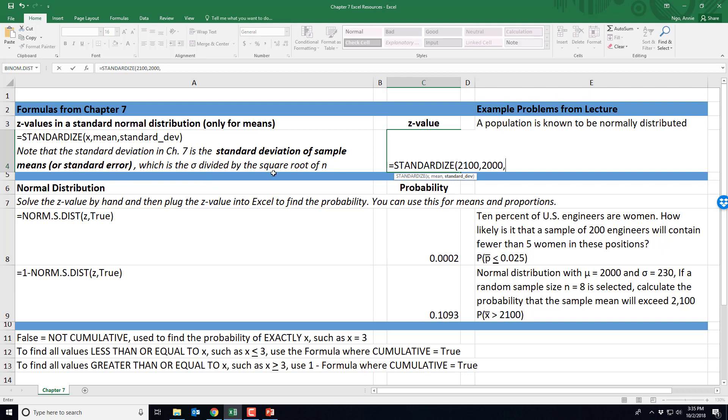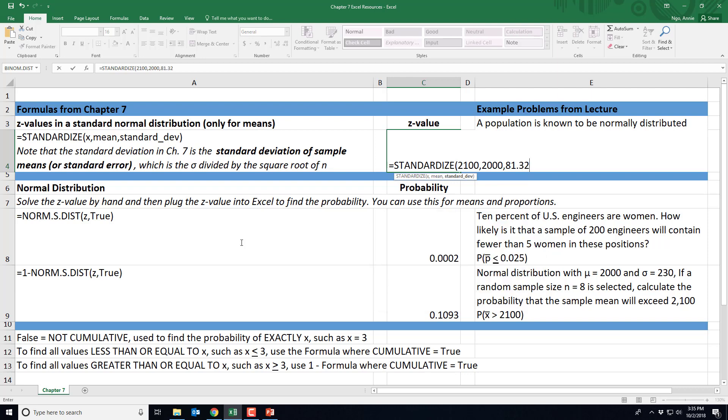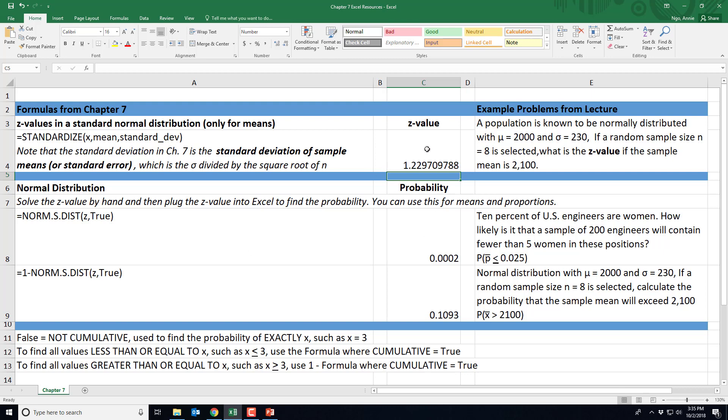And so that was the 81.32, and then close your parentheses. So that'll give us a z score, and if I round this using my decimal mover, my z score is 1.23.